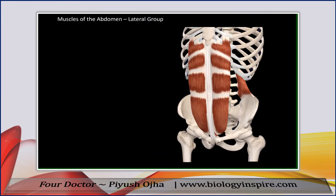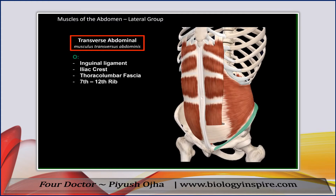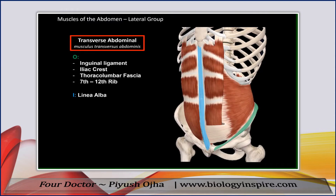The last group is the lateral group. The first is the transverse abdominal muscle. It originates from the inguinal ligaments and the iliac crest, from the thoracolumbar fascia on the lumbar region, and from the seventh to the twelfth rib. Its tendons insert at the linea alba. Its function is to rotate the trunk and also increase the intra-abdominal pressure to aid with expiration.